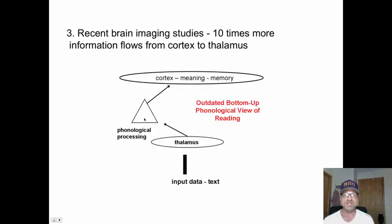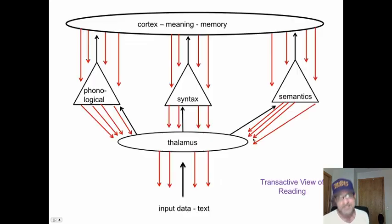Brain imaging studies show that ten times more information flows from the cortex to the thalamus than the thalamus to the cortex. This is the outdated, bottom-up view of reading that says reading is sounding out words. Sadly, many studies are still based on this outdated view.